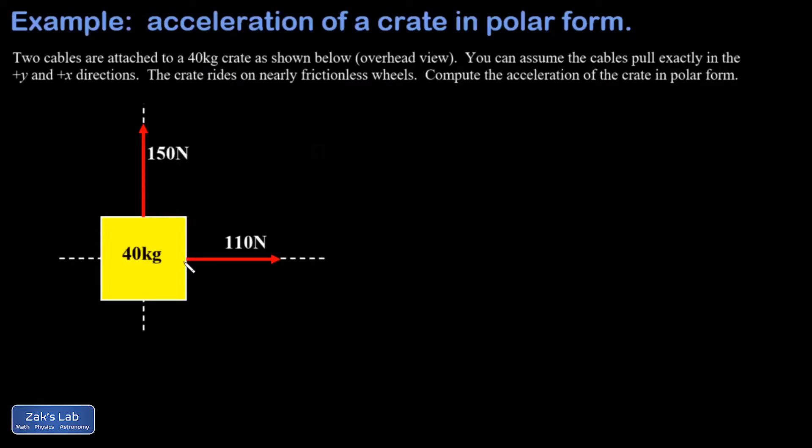In this video, we're given two forces acting on a crate. This is an overhead view of the crate sitting on frictionless wheels, so we don't have to worry about friction. We're asked to find the acceleration of the crate in polar form, which means we need to find the magnitude